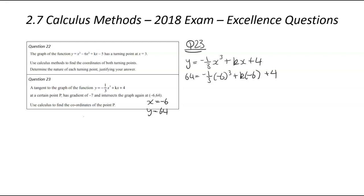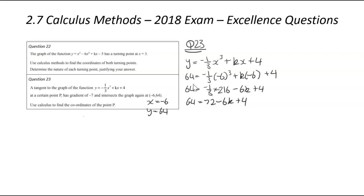Let's write down the original function. I know x equals negative 6 and y equals 64, so I'll substitute those in: 64 equals negative one-third times (negative 6) cubed plus k times (negative 6) plus 4. Simplifying: 64 equals negative one-third times negative 216 minus 6k plus 4, which becomes 64 equals 72 minus 6k plus 4, giving 76 minus 6k equals 64. So 6k equals 12, which means k equals 2.